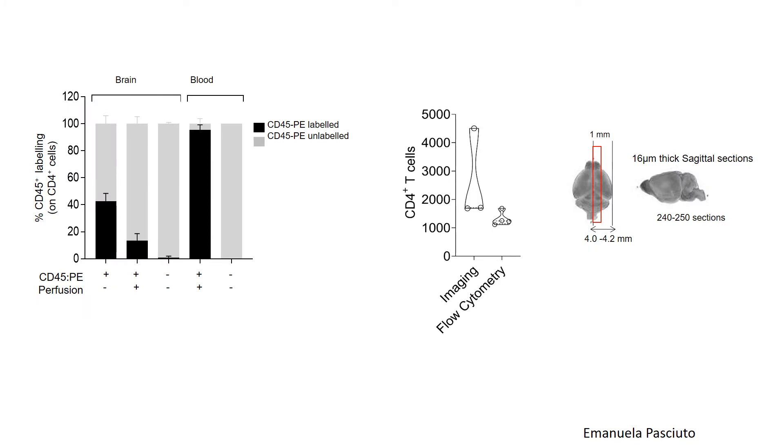Switching over to flow cytometry, we lose the anatomical resolution of imaging. However, we are able to throughput many more cells and also collect phenotypic information on these cells. Here, the key technique is to perfuse mice with CD45PE just before the point of death. The CD45PE entering circulation labels all cells that are inside the blood or have contacted with the blood.